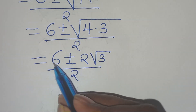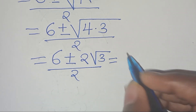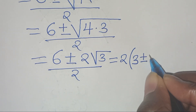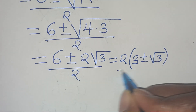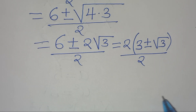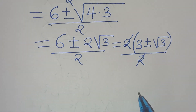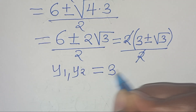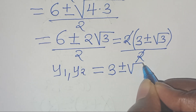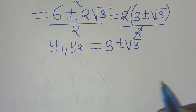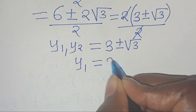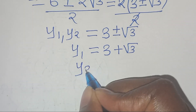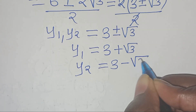In the numerator, 2 is common, so we factor out 2 to get 2 times (3 plus or minus the square root of 3), all divided by 2. The 2s simplify, so y1, y2 equals 3 plus or minus the square root of 3. Therefore y1 equals 3 plus square root of 3, and y2 equals 3 minus square root of 3.